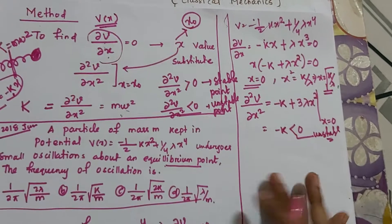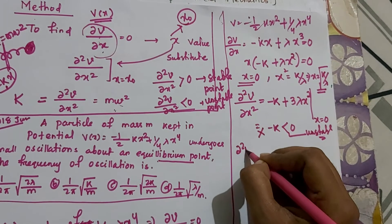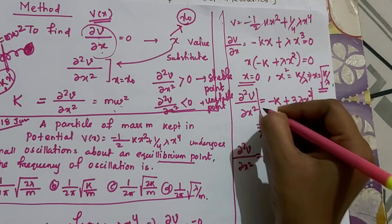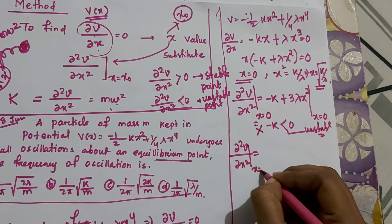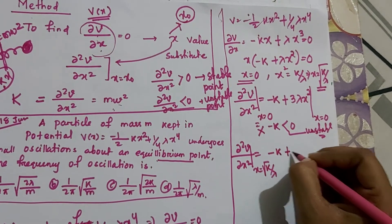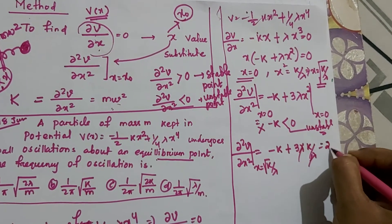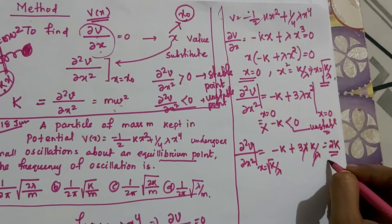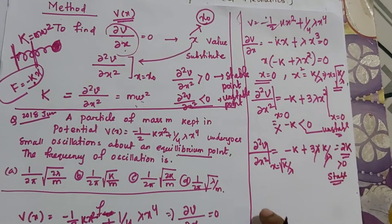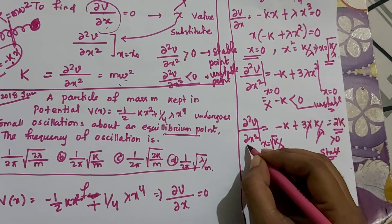So we don't use x = 0. We check the second equilibrium point x = √(k/λ). Substituting into ∂²V/∂x² = −k + 3λ(k/λ) = −k + 3k = 2k. Since 2k > 0, this is the stable point.